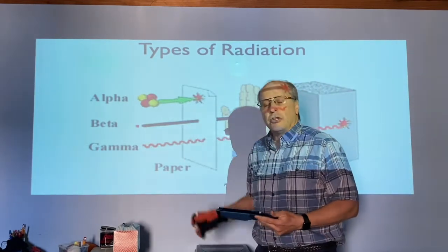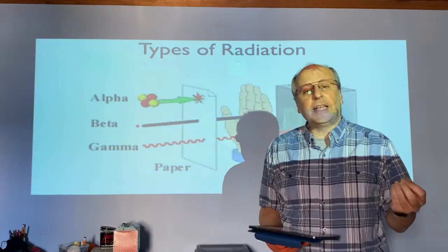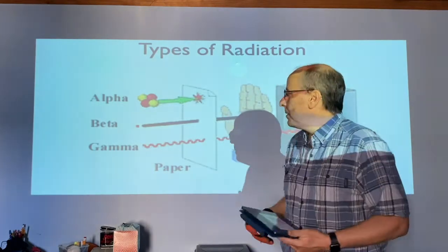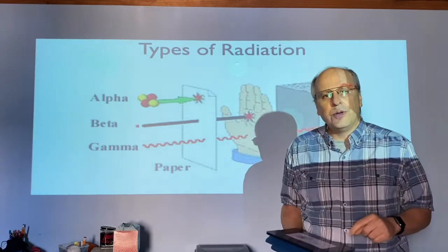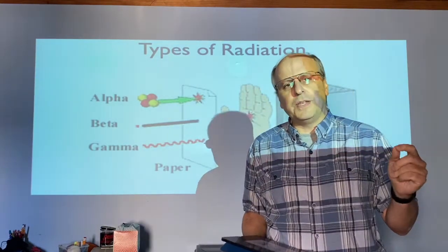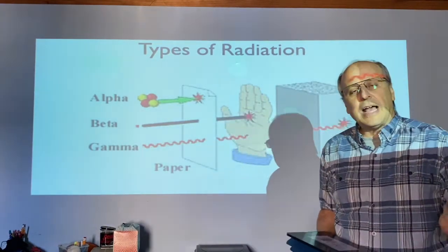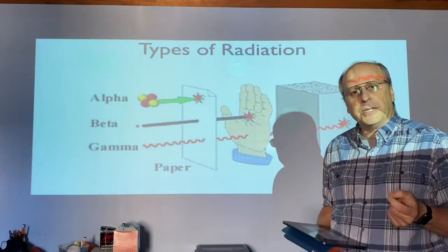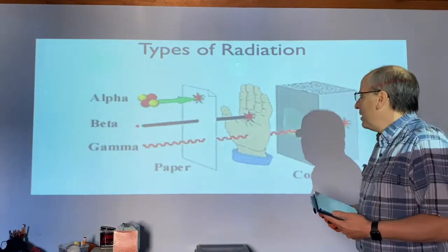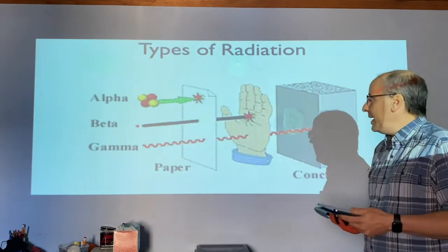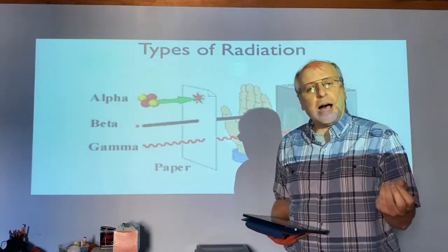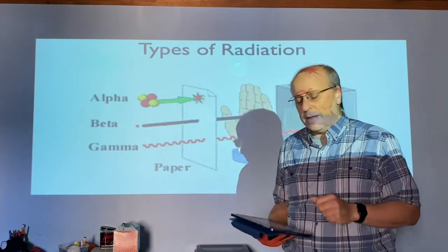With beta being so small, it's very likely to make it through. With alpha being larger, it could make it through, but the chances are relatively small of a single alpha particle making it through a sheet of paper. So this is how the different types of radiation can be blocked or passed through a material.